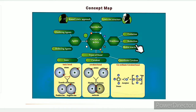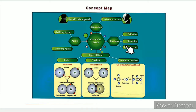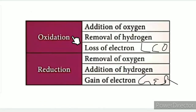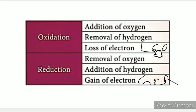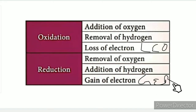The 4th topic covers oxidation, reduction, and redox reactions, including oxidizing agent and reducing agent. The law of electron in oxidation: removal of oxygen, addition of hydrogen, gain of electron. This is GER — gain of electron in reduction.